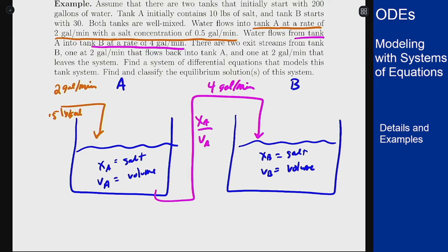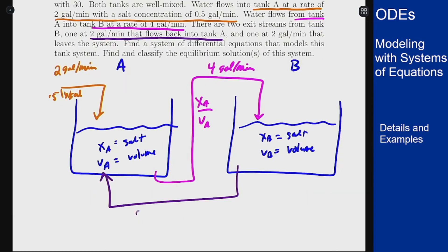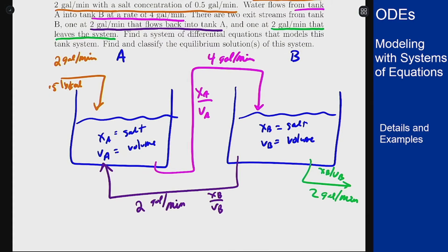There's two exit streams from B: one 2 gallons per minute that flows back into A. So this here is at 2 gallons per minute and its concentration will be XB divided by VB because it's based on the stuff that is in tank B that it's flowing away from. And then one at 2 gallons per minute that leaves the system with the same concentration. We're going to set up a system that models this.